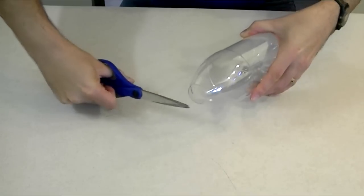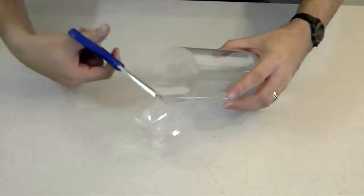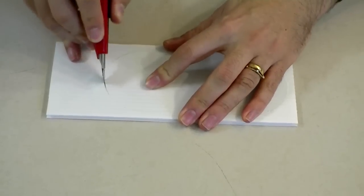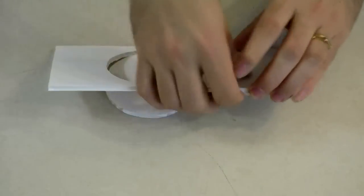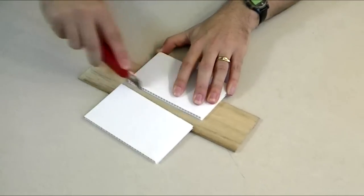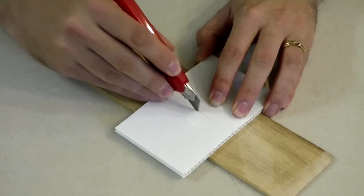Start with an empty bottle and cut the top off. Cut the bottom off. Cut out two circles. Cut out a rectangle and slice one side.